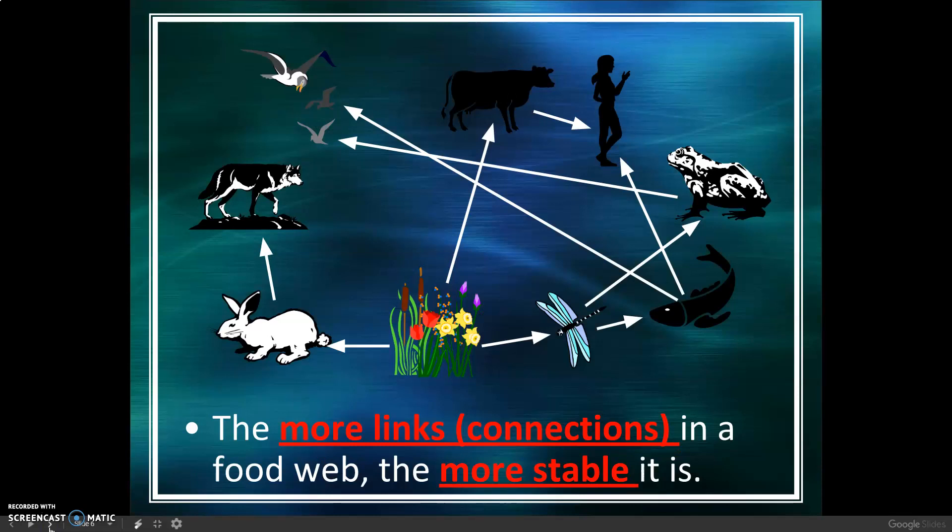The more links or connections in a food web, the more stable it is.